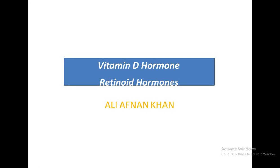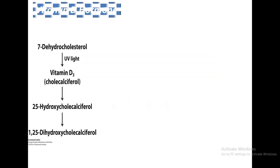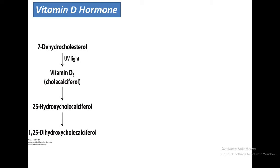Assalamu alaykum viewers, I hope you're all fine. I am Alifnan Khan and today we will discuss vitamin D hormone and retinoid hormones. Vitamin D hormone — we call it calcitriol — and its active form is called 1,25-dihydroxycholecalciferol. We can obtain it from diet or it can be produced from photolysis of 7-dehydrocholesterol.